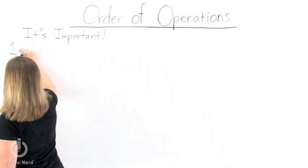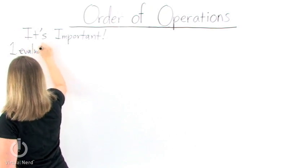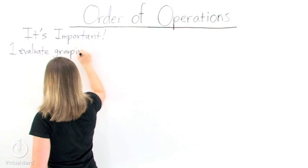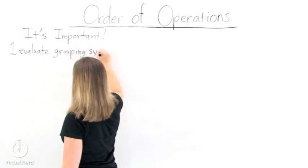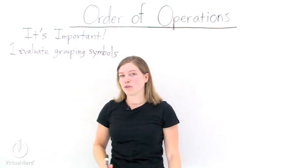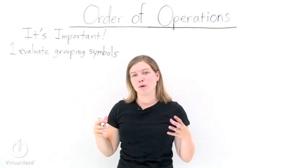Our first step in the order of operations is to evaluate grouping symbols. Grouping symbols include any brackets, parentheses, or fraction bars you might have. Now you want to make sure to evaluate these grouping symbols from the innermost one to the outermost one.